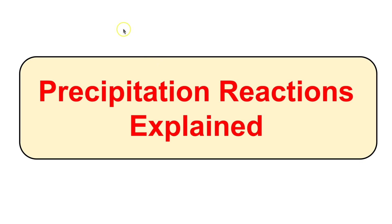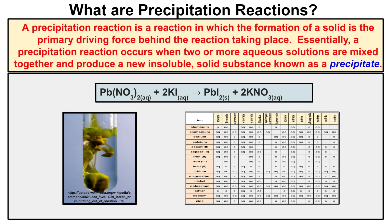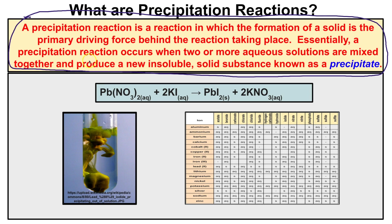Hey guys, this is Mr. Millings and in this video we are going to learn about precipitation reactions. A precipitation reaction is a reaction in which the formation of a solid is the primary driving force. The reason why these reactions take place is because a solid can be produced. Essentially, a precipitation reaction occurs when two or more aqueous solutions are mixed together and produce a new insoluble solid substance known as a precipitate.